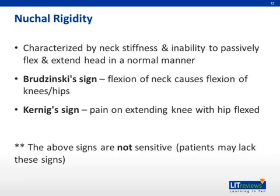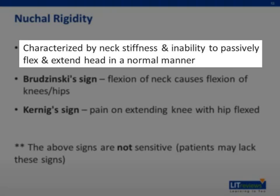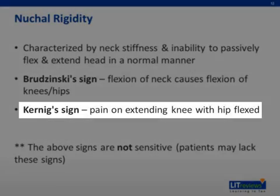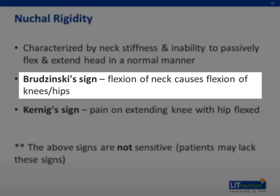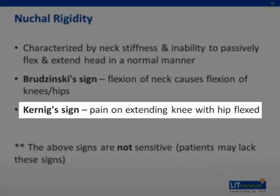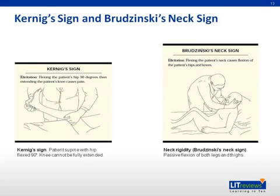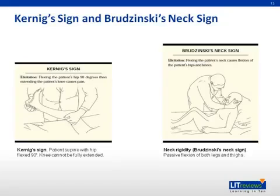Nuchal rigidity means neck stiffness — pain and inability to passively flex or extend the head in a normal manner. Some things you might test for are Brudzinski sign and Kernig sign. Brudzinski sign is flexion of the neck causing flexion of the knees and hips. Kernig sign is described by pain when you extend the knee with the hip flexed. With the patient supine, you flex the hip at 90 degrees and the knee cannot be fully extended because it causes pain to the inflamed meninges.